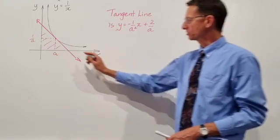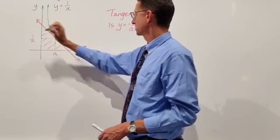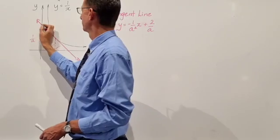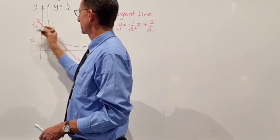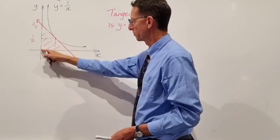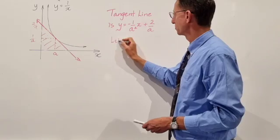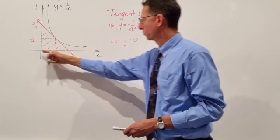Now what we're going to try and do is determine the x intercept for the tangent line. We've already got the y intercept for the tangent line, that's 2 on a. So that gives us the height of our triangle where we're trying to find the area. We just need the base of the triangle. So what we'll do is we'll let y equal 0, which is the value for y on the x axis.